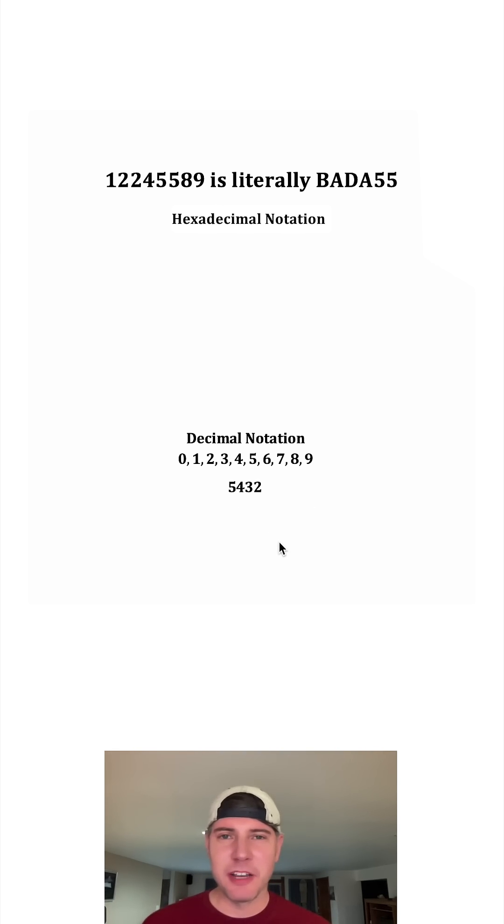And if we choose a random number like 5,432, you can evaluate it like this. You can take each of the digits and multiply them by 10 to the 0, 10 to the 1, 10 to the 2, and 10 to the 3, and then you can add them all together.